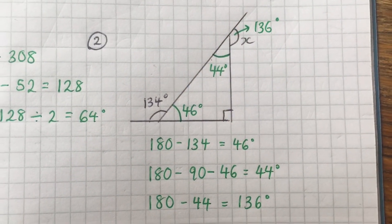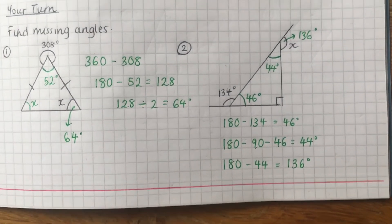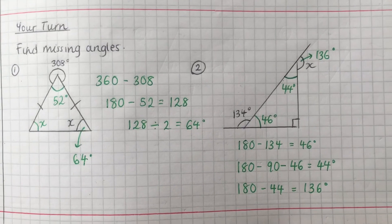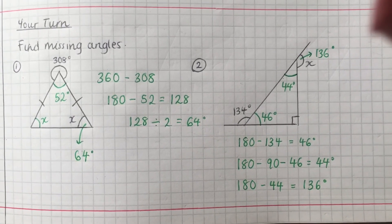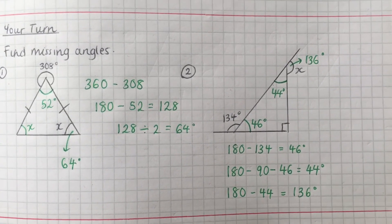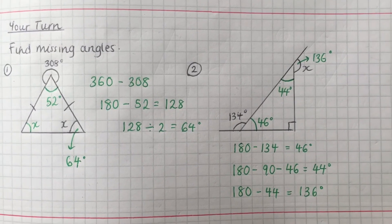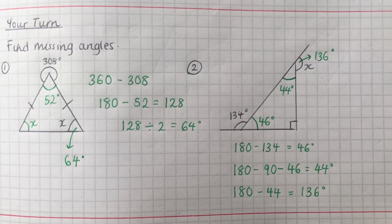Well done if you got those right. Once you've got these two written down and corrected, you can move on to the GCSE style questions that bring everything you've learned in these three videos together. Make sure that you've answered all the exit cards your teacher has sent to you.